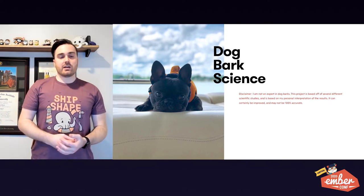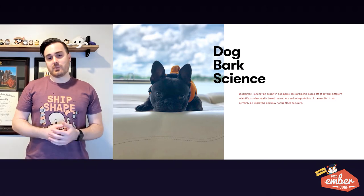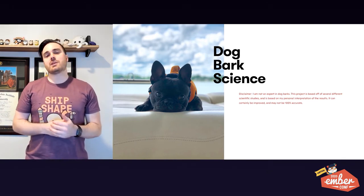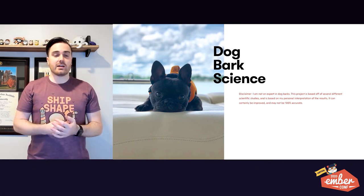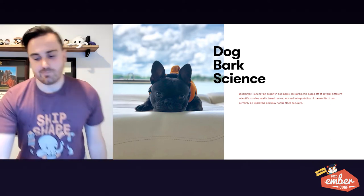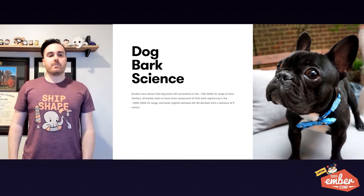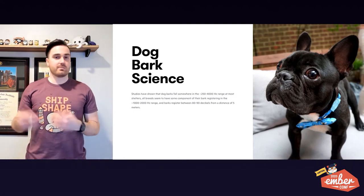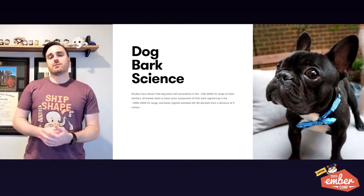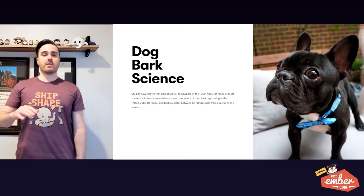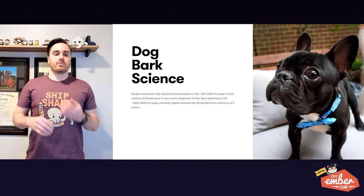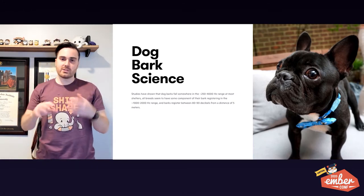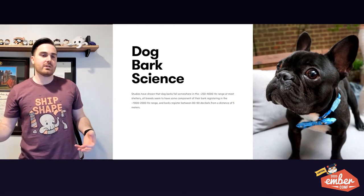The next part is actually figuring out dog bark science — and I'm not an expert in dog barks. This project is based off of several different scientific studies where experts measured this, but it's based on my personal interpretation of those results. These studies found that dog barks are somewhere in the 250 to 4,000 Hertz range. They measured output from dogs barking at shelters and also determined that all breeds have some part of their bark in the 1,000 to 2,000 Hertz range, and the amplitude is roughly 80 to 90 decibels from about five meters away. Anything outside of that can be mostly thrown out.